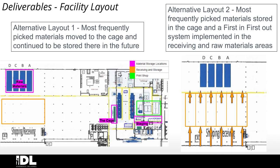For our next deliverable, we decided to look at facility layout. This is the current layout of IDL's facility. In purple are the material storage locations — raw materials in the main storage area, the cage, the secondary storage location, and the staging areas for the printers. The orange is the receiving department where newly received materials are stored. The green is the location of the three presses in the print shop.